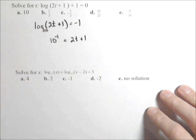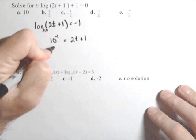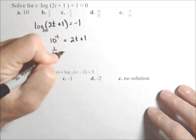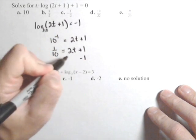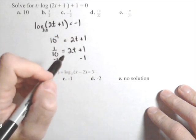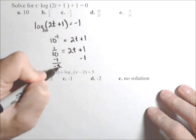So you can do this as a decimal or as a fraction. I'm gonna do it as a fraction. So 10 to the negative one is one tenth equals 2t plus one. And I'm gonna subtract one off of each side. So what I'm gonna have, this is equal to negative nine tenths.